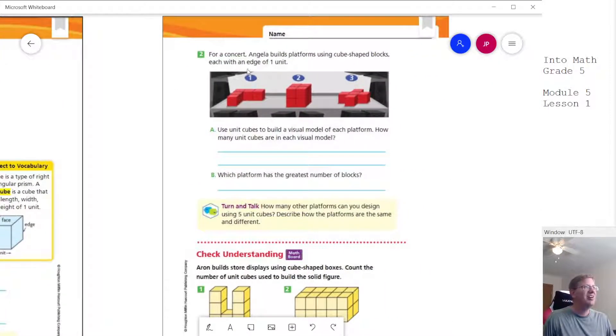So for the next part, we are working with cube shape blocks again, and we want to figure out how many of these that we use. So how many cubes? We have one, two, three, four, five for number one. Number two, again, we're going to have a group of four here, and we have two rows of that. So that would give us eight. And then for this one, we would also have five. Which platform has the greatest number of blocks? We would say that that's number two.